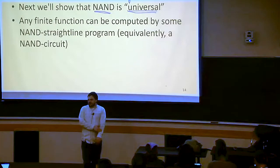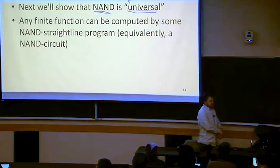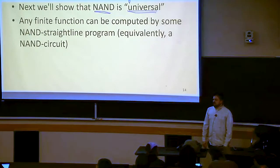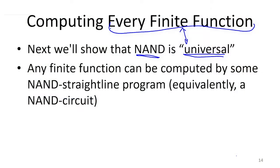So this says every function is a valid function for you to try to implement in your circuits. Some of them are going to require more gates than others, but any function that you could ever think of that's a finite function, you can create a circuit to do it. So what we're going to do is we're going to show that any finite function at all can be computed by some NAND straight line program, or equivalently a NAND circuit, or equivalently an AND or NOT circuit, or an AND or NOT straight line, any of these. But we're going to do it from the perspective of NAND straight line. That's going to be easiest, as it turns out.